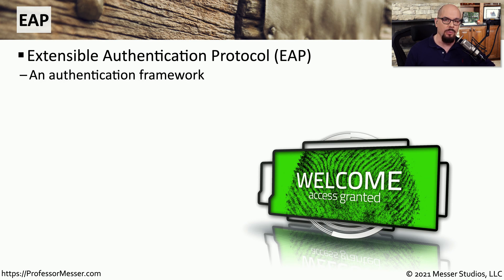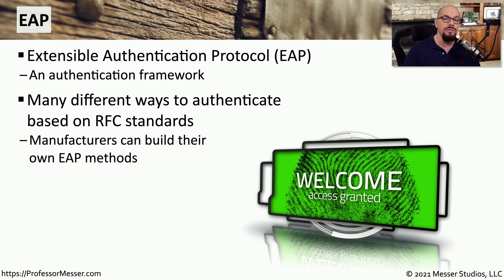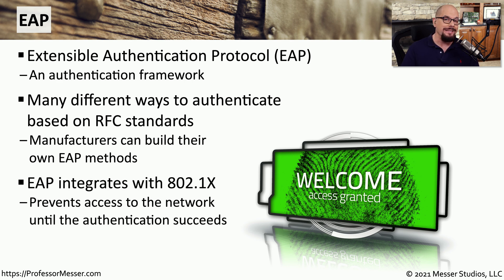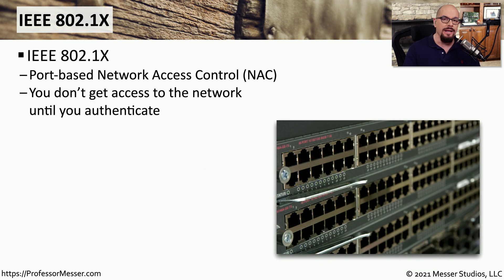Many of the types of authentication we'll use for wireless networks are built on a standard framework called the Extensible Authentication Protocol, or EAP. There are many different types of authentication methods using EAP, and different manufacturers will use EAP in different ways. In the enterprise, we commonly see EAP authentication used in conjunction with 802.1x. So when you initially connect to the wireless network, you'll be prompted for authentication details, and the EAP framework will be used to provide that authentication confirmation behind the scenes. 802.1x is also referred to as Port-Based Network Access Control, or NAC — meaning you don't gain any access to the wired or wireless network unless you provide the proper credentials.